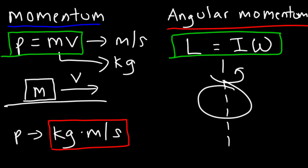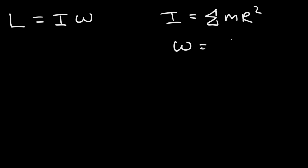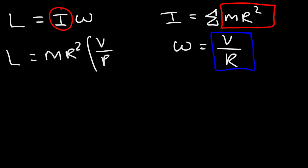There's another formula for angular momentum that you need to be familiar with. We're going to derive it starting with L equals I times omega. The inertia of an object is equal to mr squared, and omega, the angular velocity, is equal to the linear velocity divided by r. So if we replace inertia with mr squared and omega with v over r, we get L equals mr squared times v over r. We can cancel an r, which leaves L equals m times v times r.